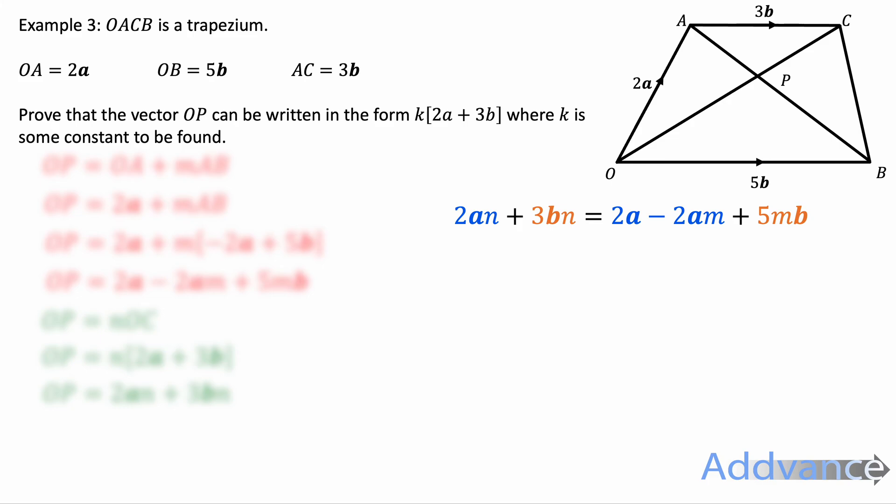We can highlight the a parts here. So the blue parts represent the a vectors and the orange parts represent the b vectors. They must be the same because the a vectors and the b vectors must match up on both sides of the equation. So we get this here. The blue parts are equal to the blue parts and the orange parts are equal to the orange parts. We divide by a and we divide by b and therefore we get 2n equals 2 minus 2 times m and 3n is equal to 5m.